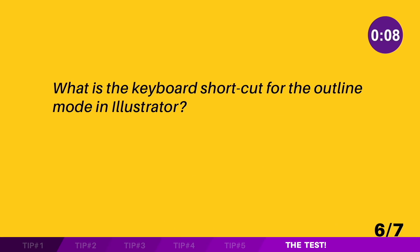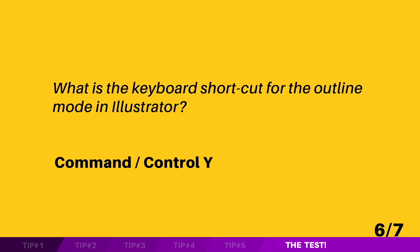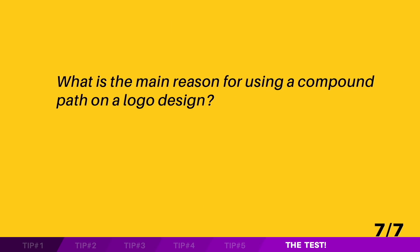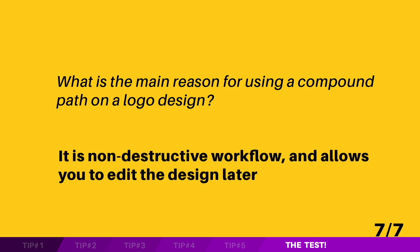What is the keyboard shortcut for outline mode in Adobe Illustrator? That is Command or Control+Y. And lastly, what is the main reason for using a compound path on a logo design? The answer is it's a non-destructive workflow method and it allows you to make edits to the design later in the workflow.